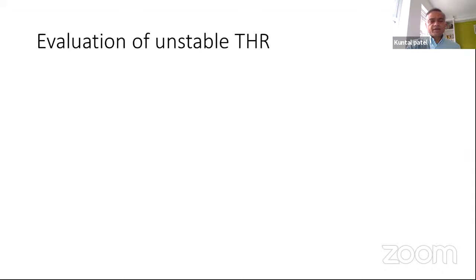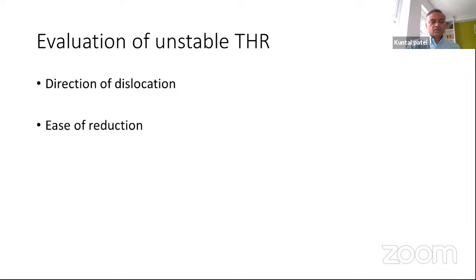When evaluating an unstable hip, you need to know the direction of dislocation. During MUA in theatre, it is very important to assess how easy or difficult it was to reduce the hip, and what is the stability post-reduction — a step often missed by junior orthopedic surgeons. You need to check how stable it is and in what direction it is unstable. Telescoping is also important as it helps determine soft tissue tension.